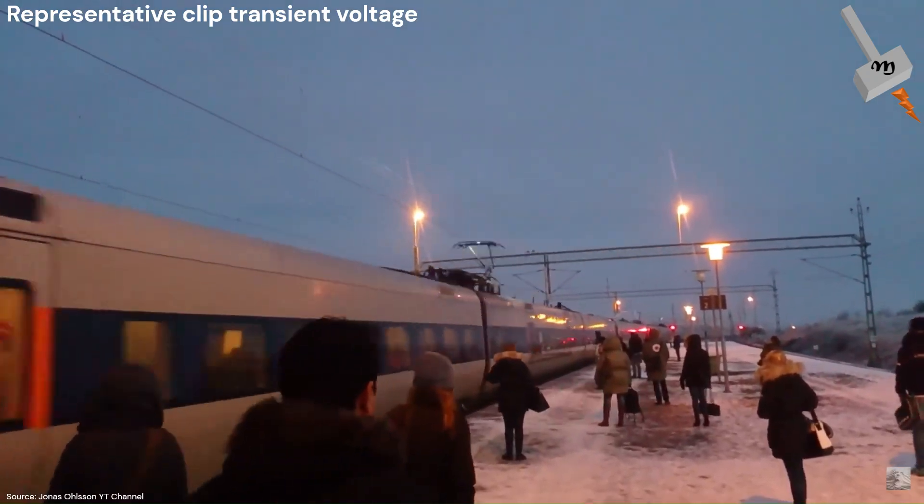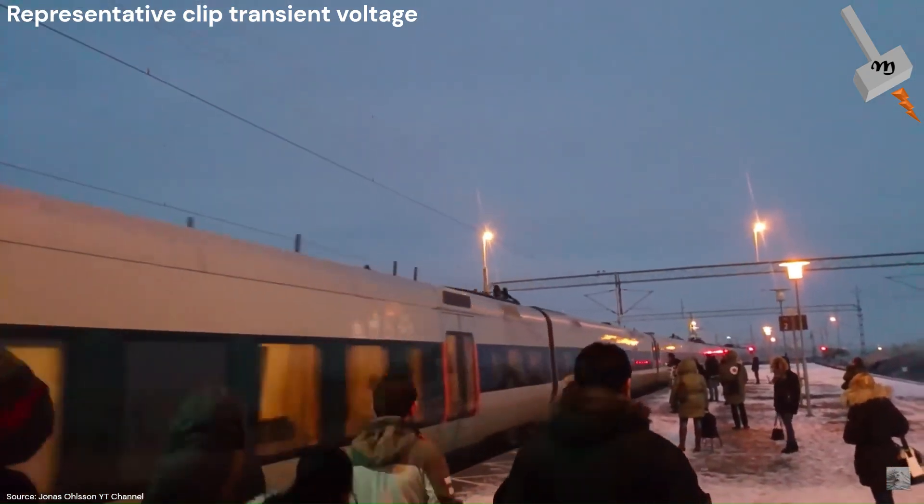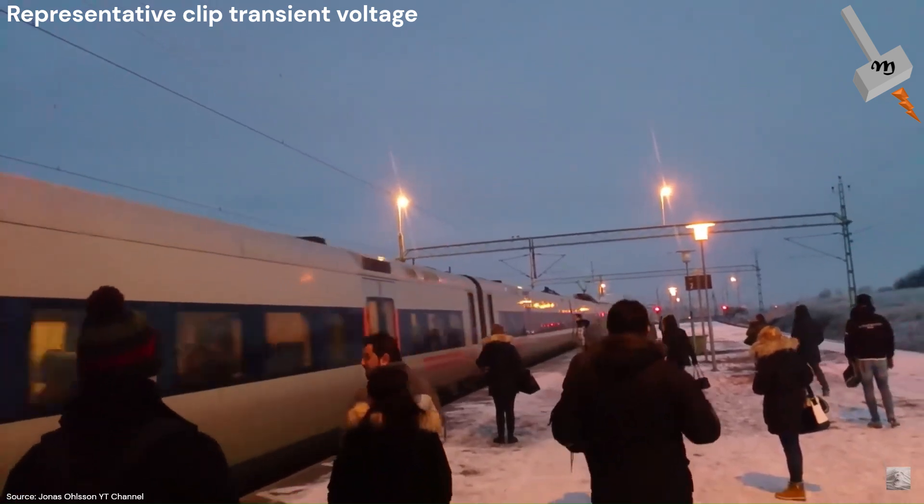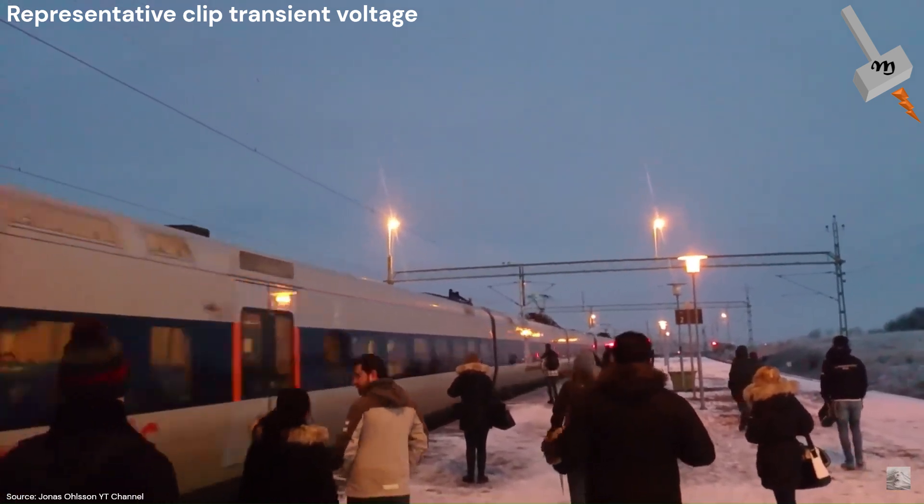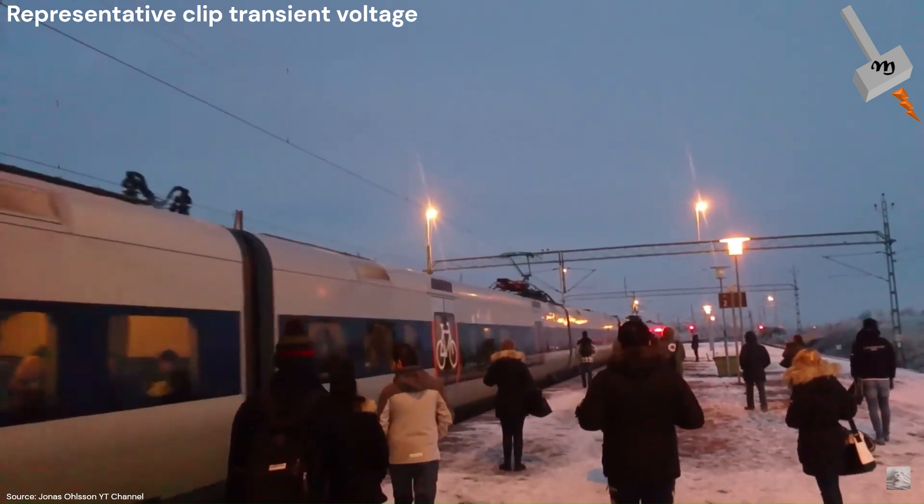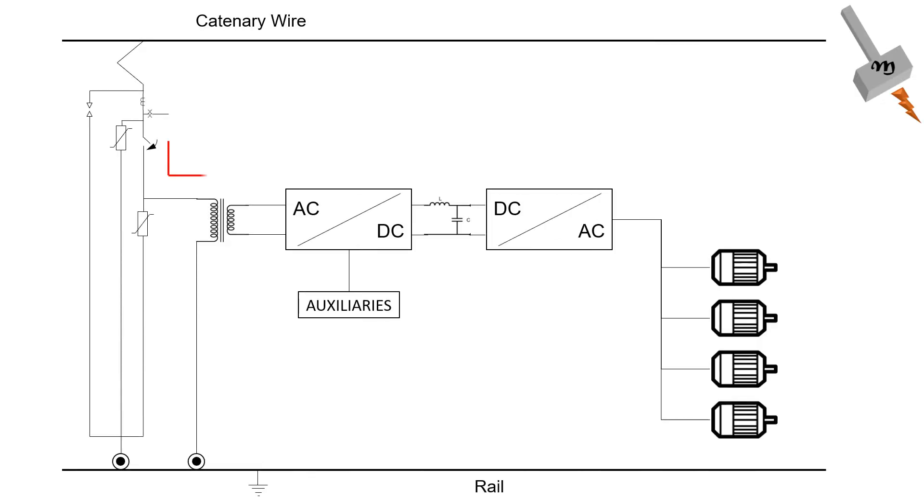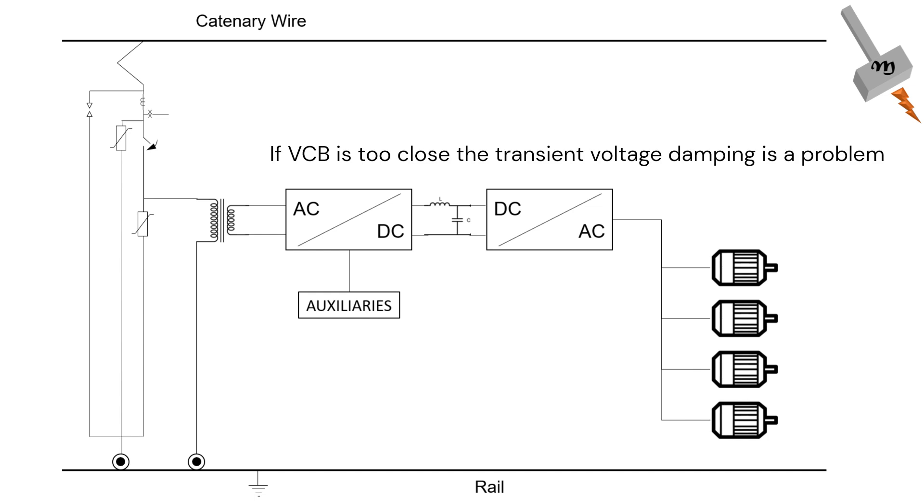Several factors can contribute to increasing this transient voltage when vacuum circuit breakers switch on or off. Number one is the proximity of the VCB. If the VCB is very close to other electrical equipment like transformers, the transient voltage can be stronger and more damaging.